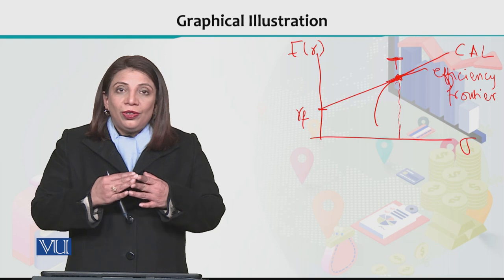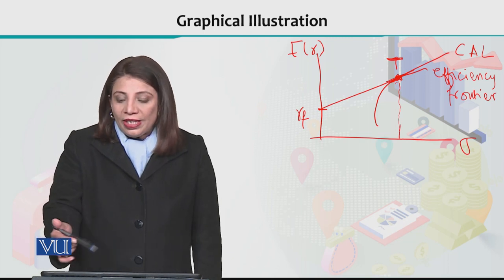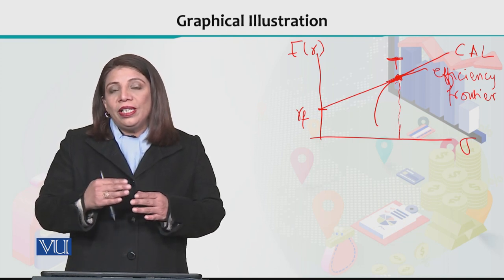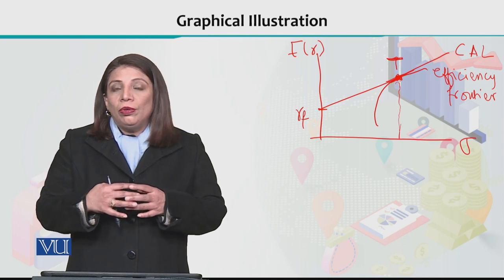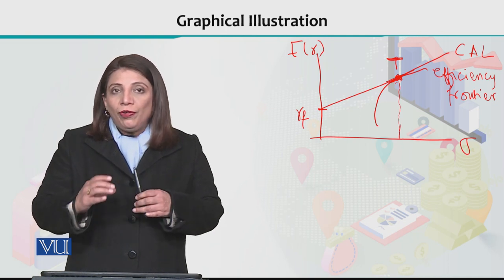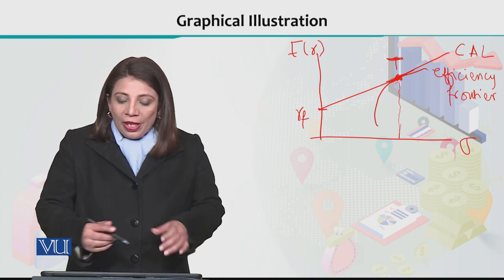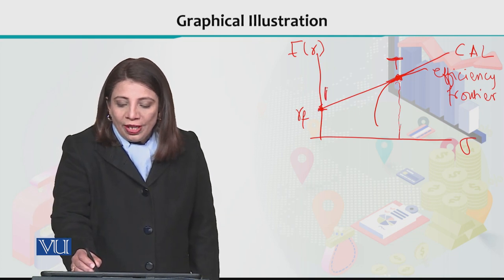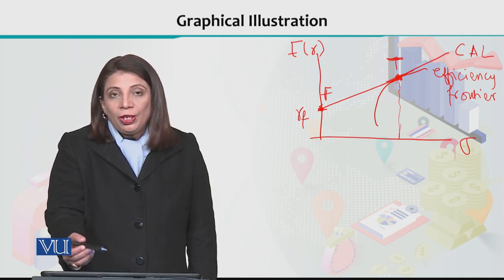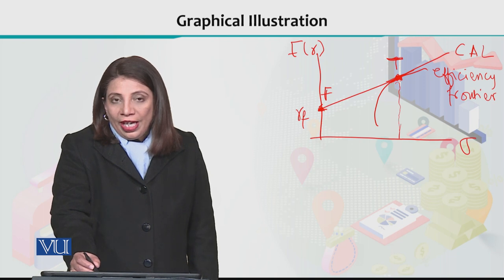The investor has options to decide from. At point T, the combinations involve putting all money into risky asset one and risky asset two. But in order to properly develop a portfolio, it is sometimes recommended to put some money in the risk-free asset also. For that, if we label the risk-free point as point F and the tangency point as point T, any investor deciding their portfolio will go for any combination that falls on the line between point F and point T.